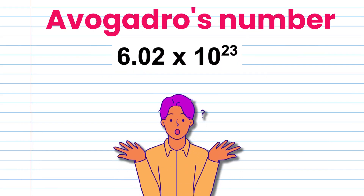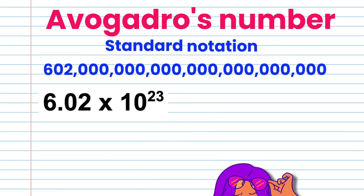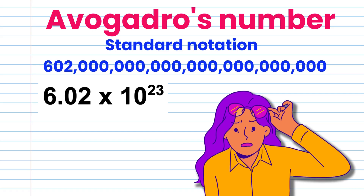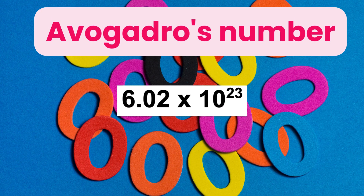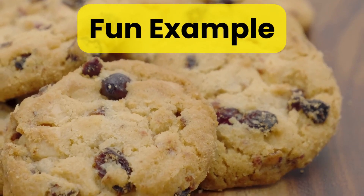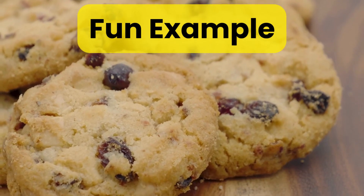Avogadro's number is a staggering 6.02 times 10 to the 23. In standard notation it is 602 followed by 21 zeros. That's a lot of zeros, so let's put this into perspective.